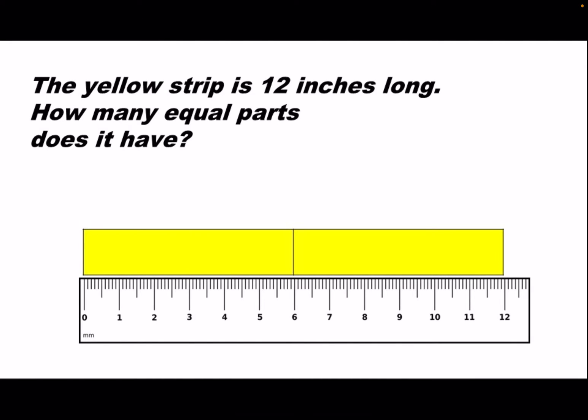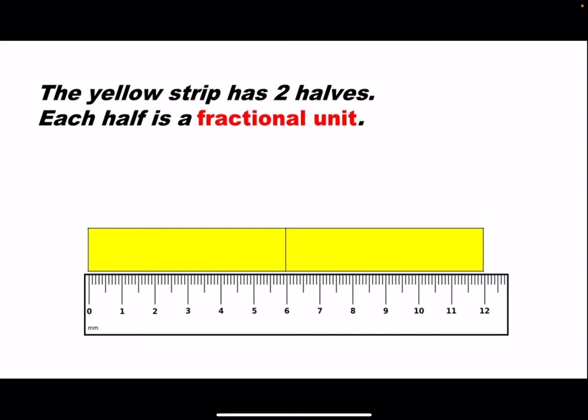The yellow strip is 12 inches long. How many equal parts does it have? It has two equal parts. Do you see the line going straight down the middle? That's halfway. The strip is divided into two equal parts. The yellow strip has two halves.